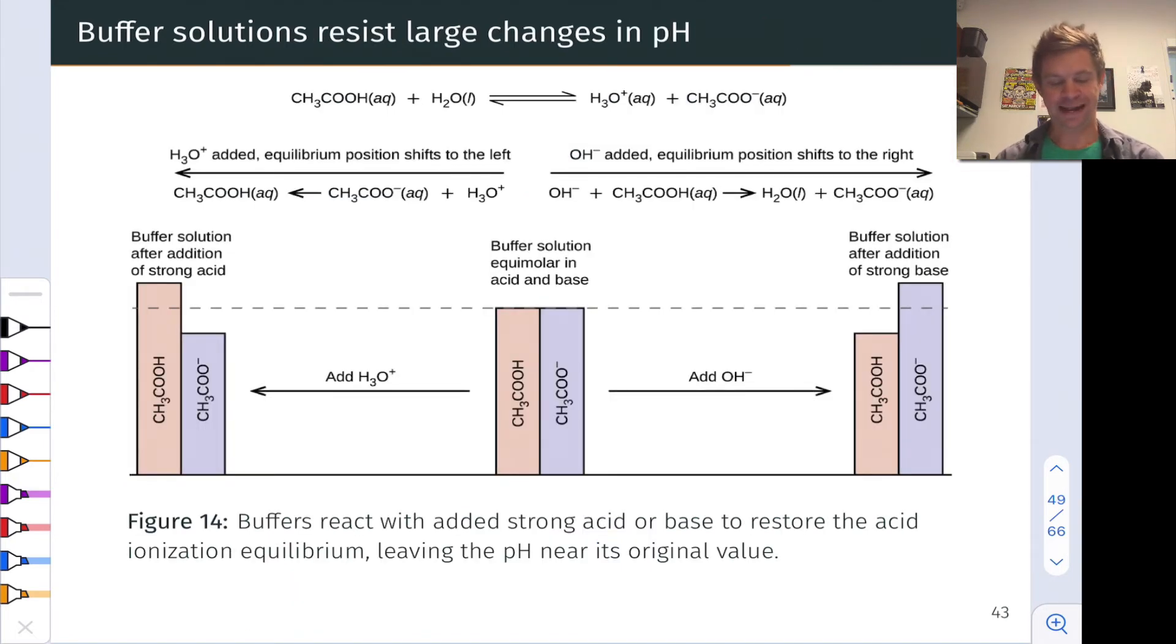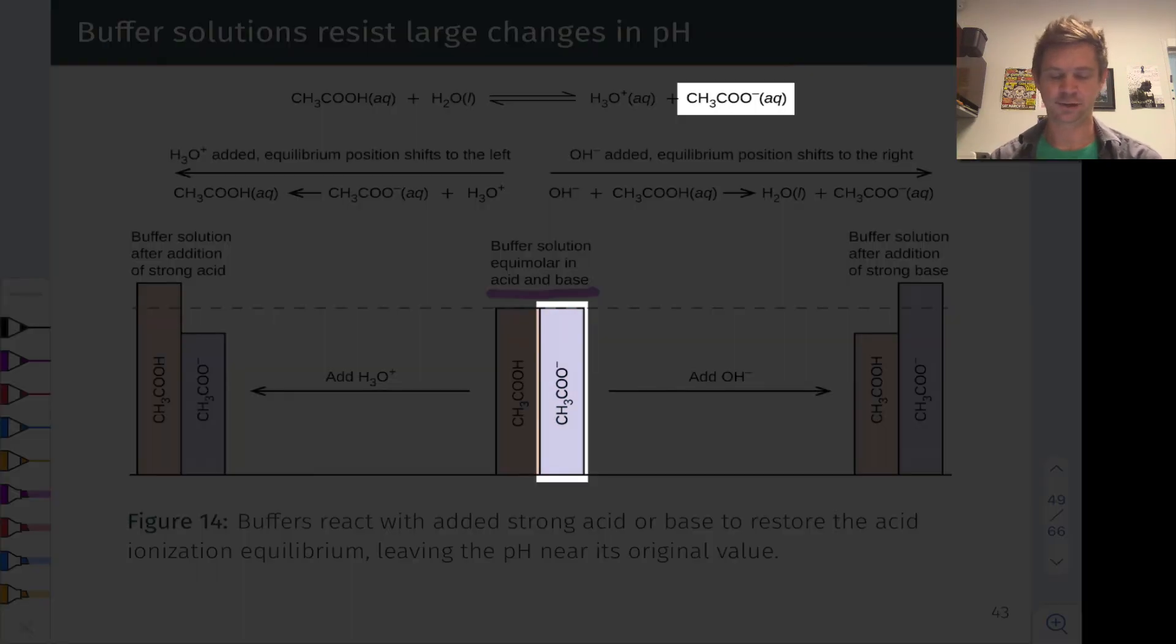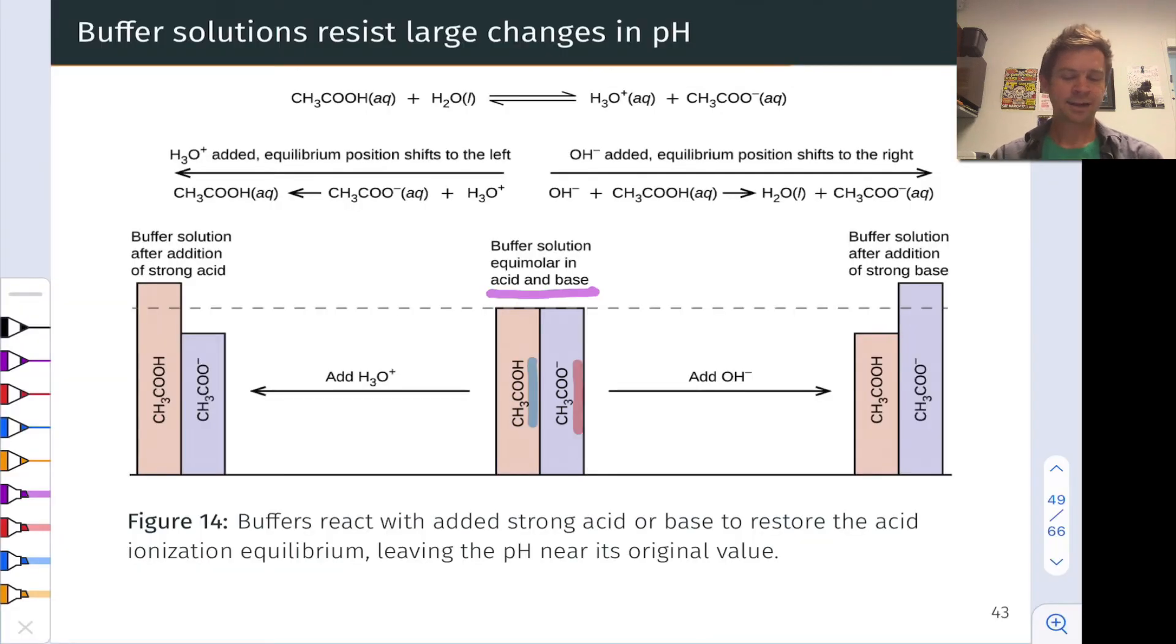To begin thinking about how this works, let's consider what happens when we add strong acid to a buffer solution. We start with a buffer with equal numbers of moles of acetic acid CH3COOH and its conjugate base acetate CH3COO-. When we add H3O+ into this solution, it's going to react with the base to produce more of the conjugate acid of the weak base, acetic acid.